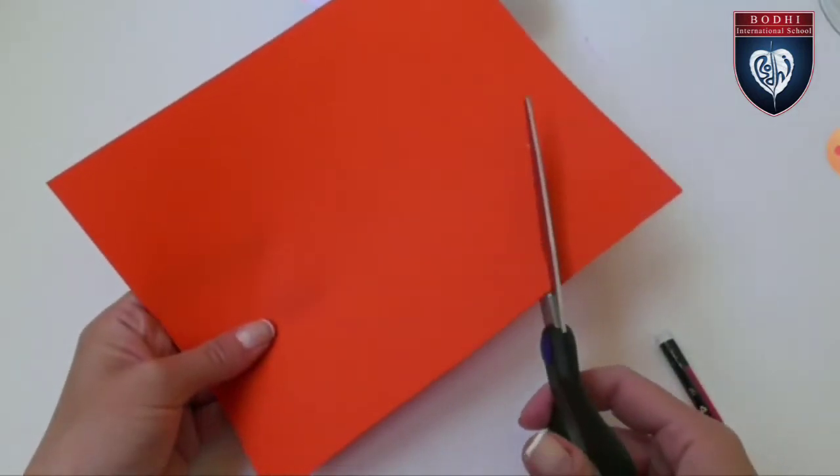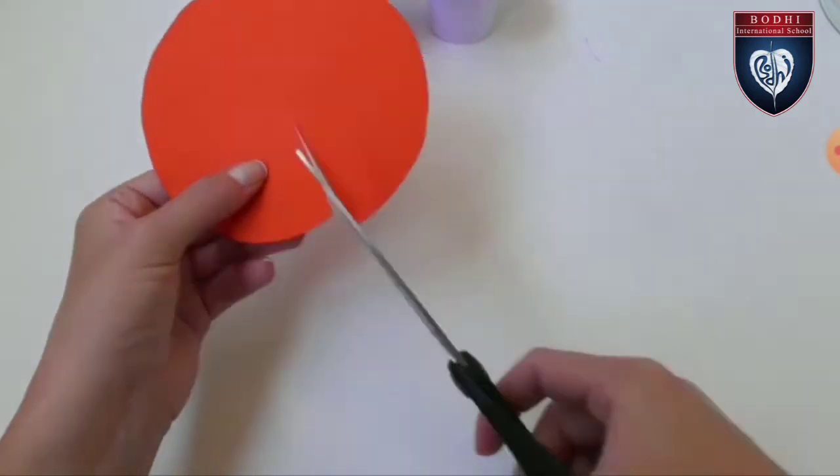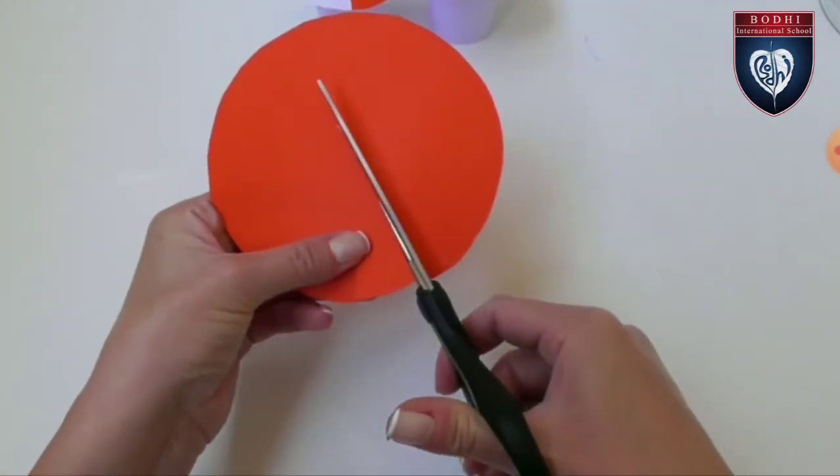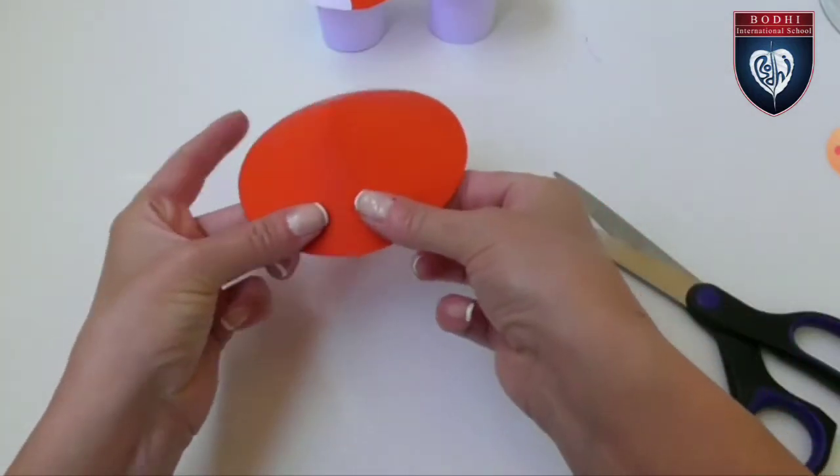Now cut this. Again cut out a straight line towards the center and another similar to it near it. And take this part. Now paste this.